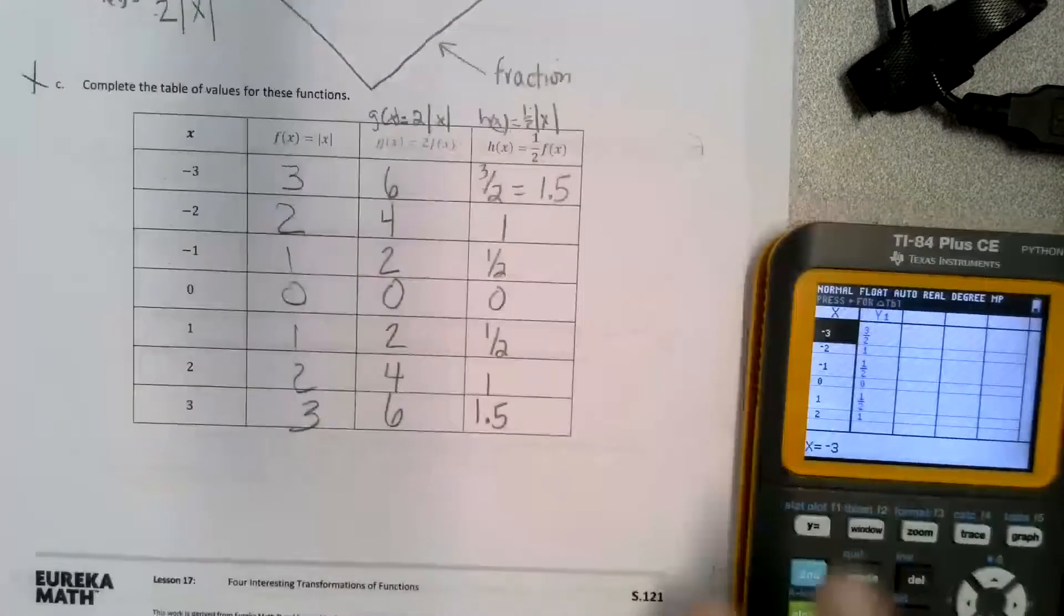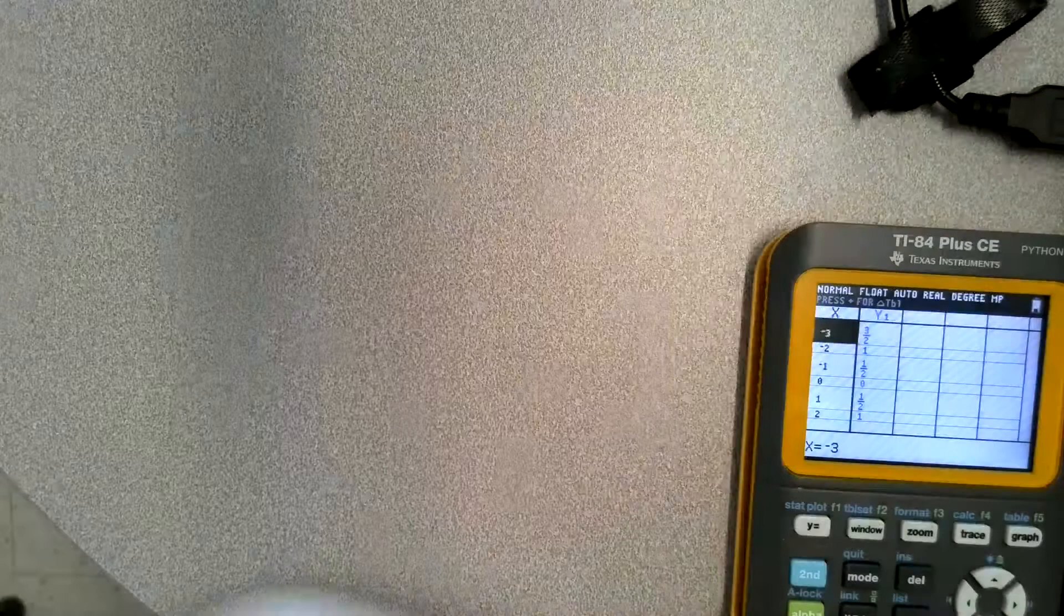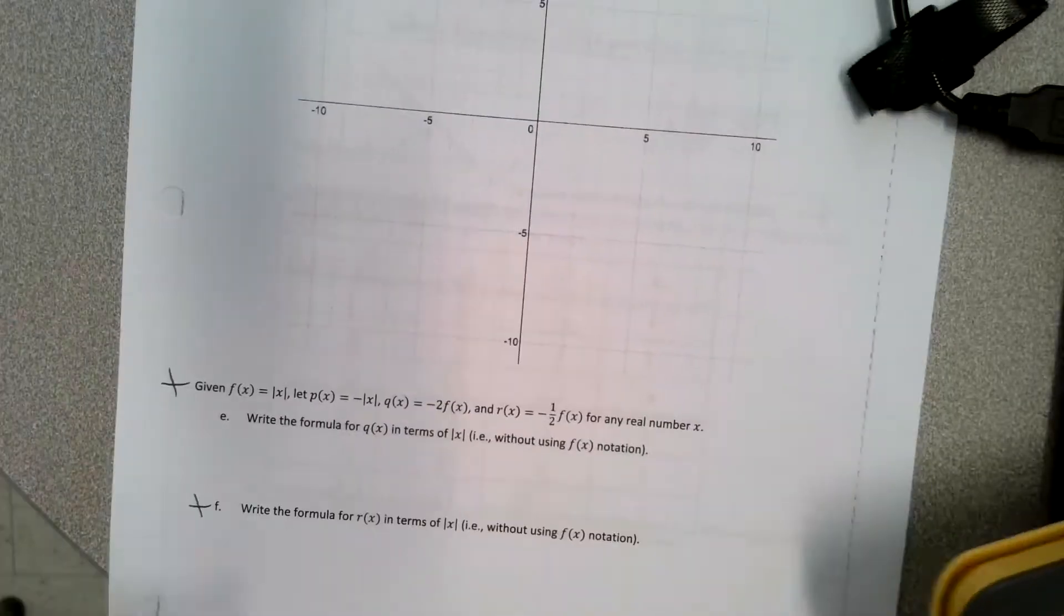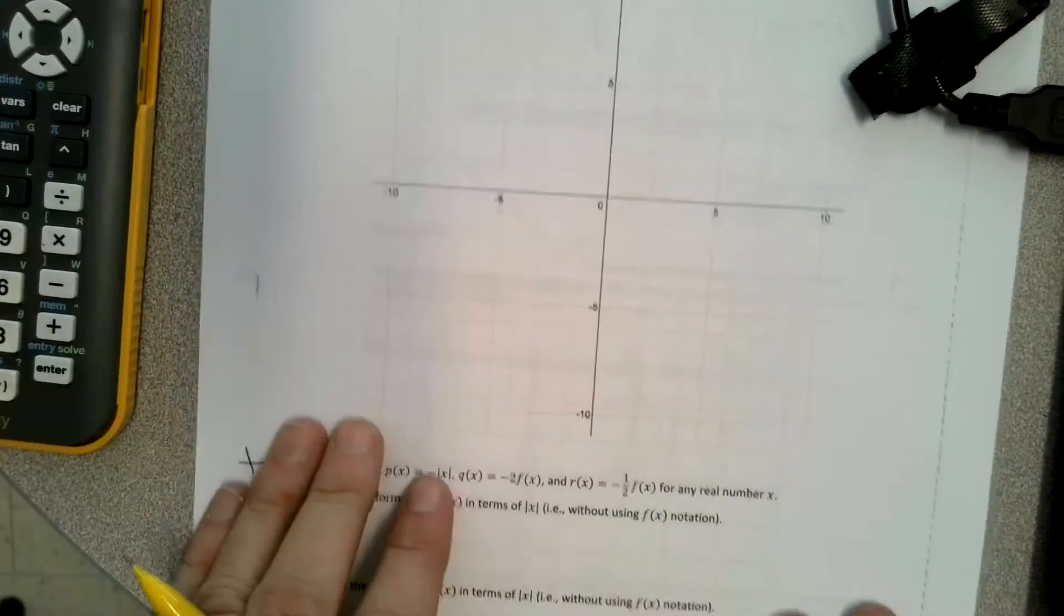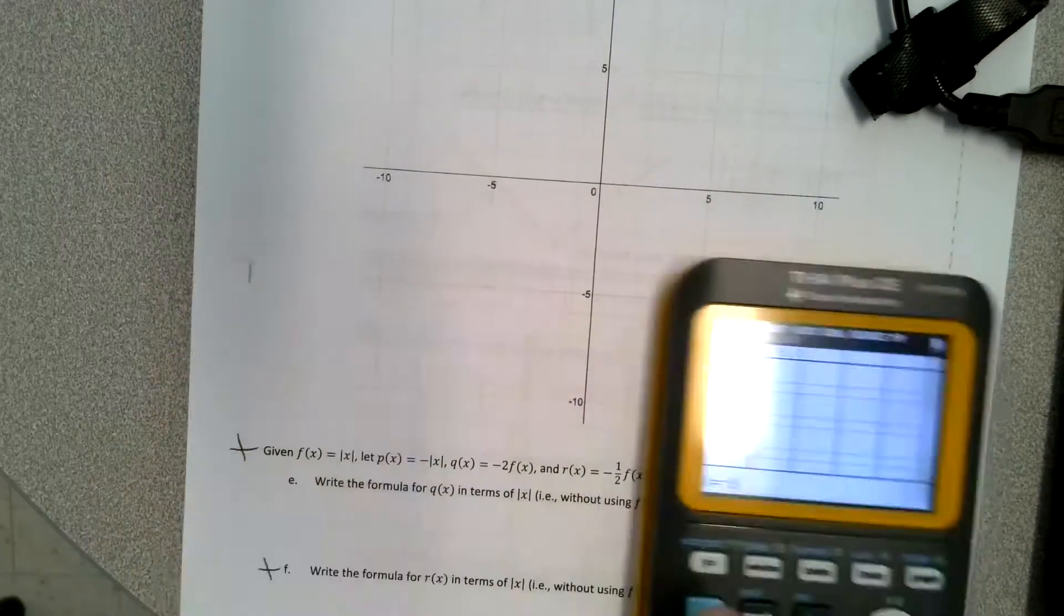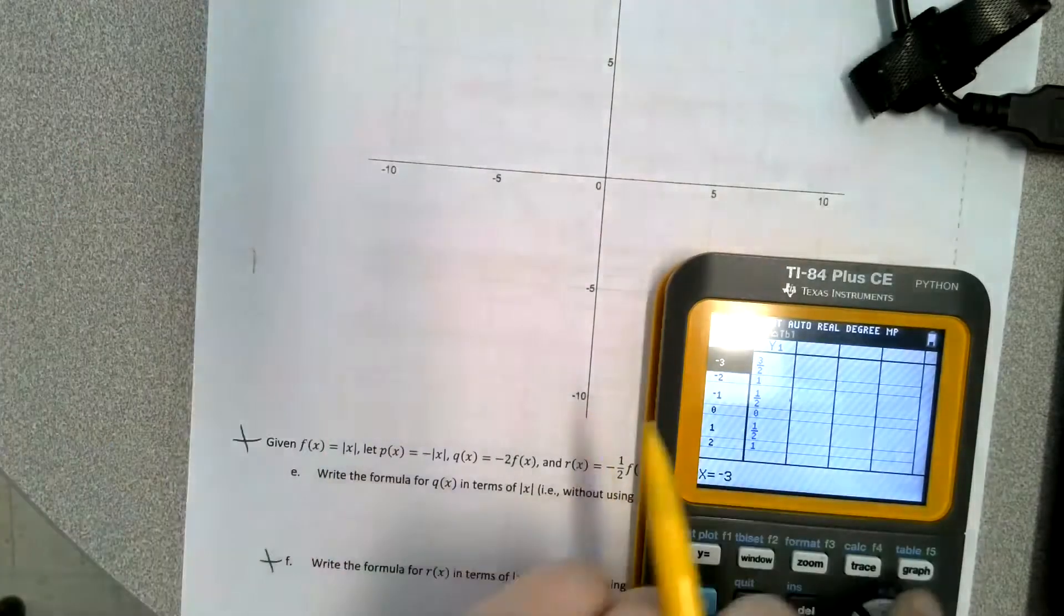So now we're going to look at how these are graphed. On this side of the paper, we are going to graph these. When we graph these, you'll be able to see what they look like. So since this one's already in, we're going to graph this one first.